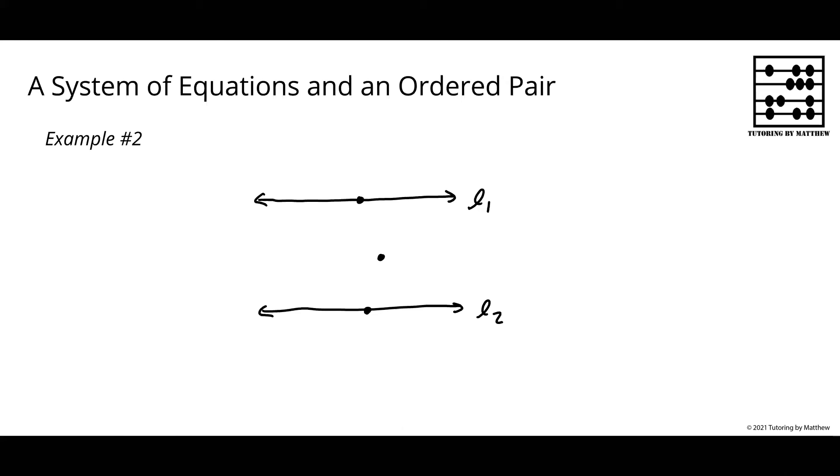But also notice in this scenario when you have two parallel lines, there's no possibility for the intersection of the two equations or the two lines. Meaning that the point is either on one line or the other, but never both.